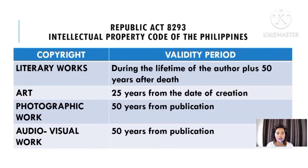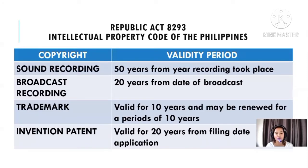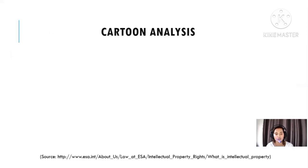Under the Intellectual Property Code of the Philippines, the validity period for each type of copyright is as follows: literary works — during the lifetime of the author plus 50 years after death; art — 25 years from the date of creation; photographic work — 50 years from publication; audiovisual work — 50 years from publication; sound recording — 50 years from recording; broadcasting — 20 years from date of broadcast; trademark — valid for 10 years, renewable after 10 years; invention patent — valid for 20 years from the filing date of the application.